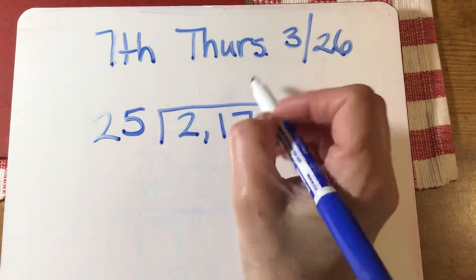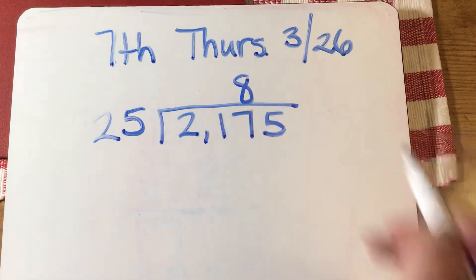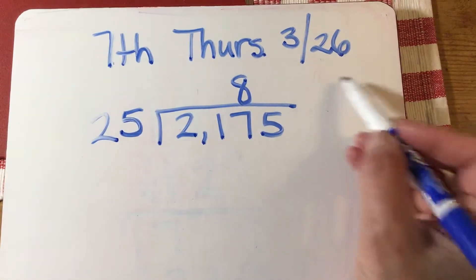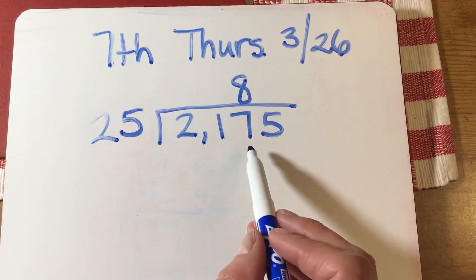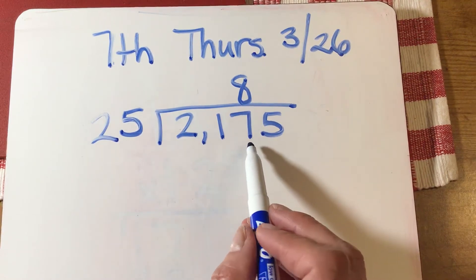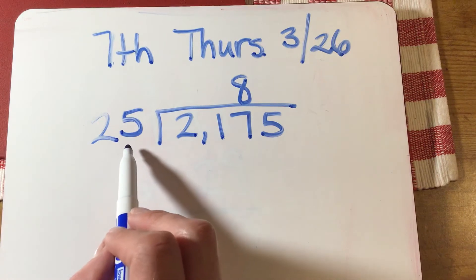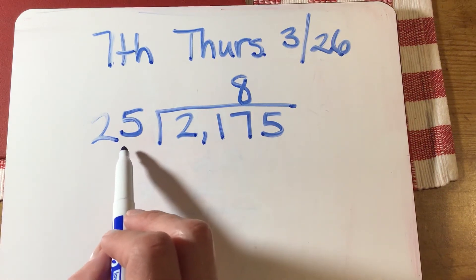Now, you may have to go off to the side and do some multiplication to try to figure out how many times 25 is going to go into 217. But I do want to give you a hint: 25—think of that as quarters, and think of a dollar as 100. So how many quarters would you need to get to 100? You would need four.